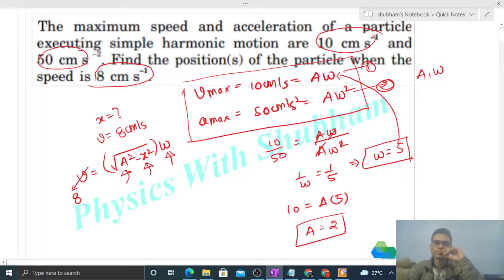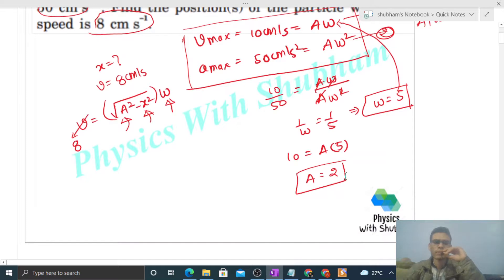Right. Fine. Now put the values here. 8, that is equal to square root of A square, that is 4, minus x square into omega, that is 5. So let's square both sides. So this will become 64, that is equal to 4 minus x square into 25. So 64 by 25, that is equal to 4 minus x square.